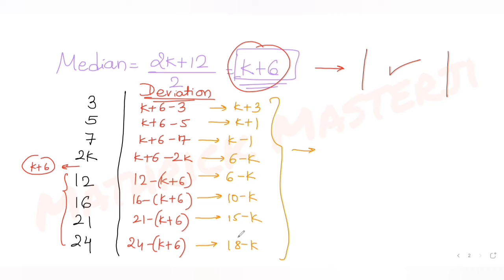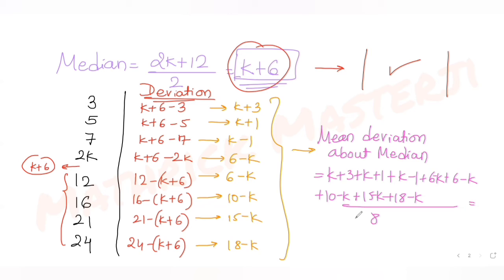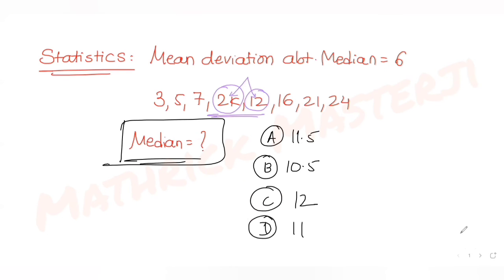Now finding the mean deviation about median: that's the sum of all deviations divided by 8. So (k + 3 + k + 1 + k - 1 + 6 - k + 6 - k + 10 - k + 15 - k + 18 - k) divided by 8, which equals 6 as given in the question.